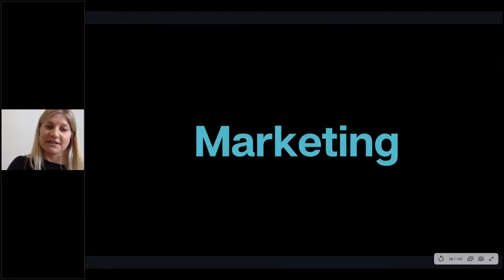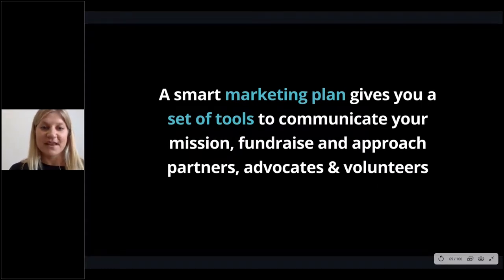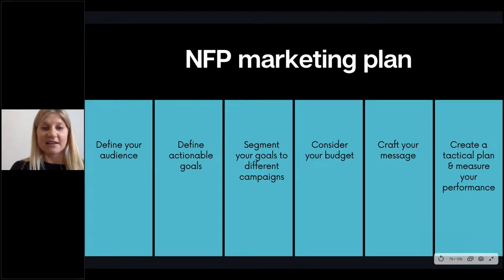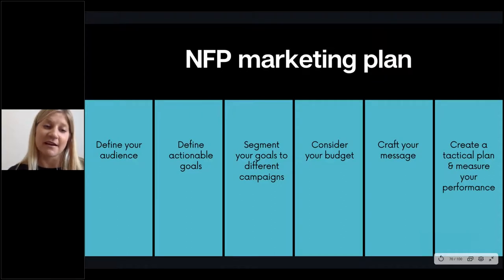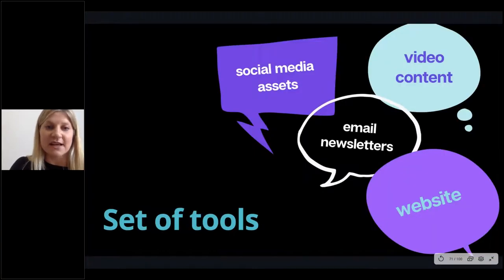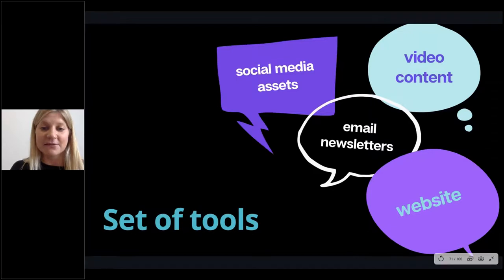The next goal we wanted to touch on was marketing. A smart marketing plan can give you a set of tools to help you communicate your mission, fundraise, and approach partners, advocates, and volunteers. First, define your audience — who you're speaking to — and then what goals you want to achieve with this audience. From there you segment your goals to your different campaigns. You may have very limited budget or a massive budget. It's important to craft a message aligned to each campaign, then create a tactical plan and measure if you're actually achieving what you set out to. By tools, we mean any means you use to communicate: social media assets, video content, email newsletters, or your website.